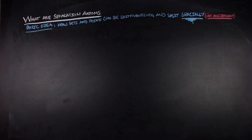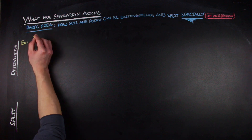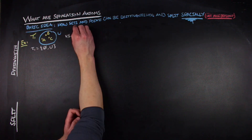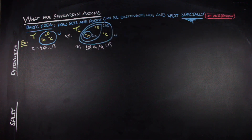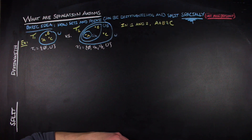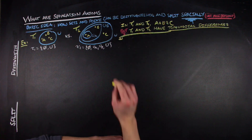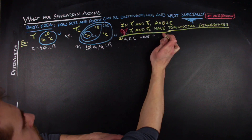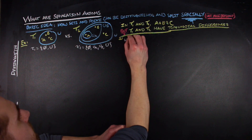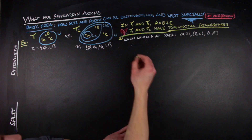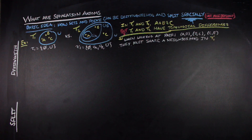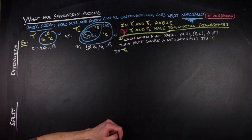Now that we have a basic framework for what a topology is, we can start talking about the different separation axioms. The basic idea is that these are additional conditions added to the requirements of our topology — things that distinguish or split points apart from each other spatially, not algebraically. In the first topology example, we can't choose a neighborhood of point a that does not contain c. Whereas in the second topology, for any pair of points, we can always find one point in that pair that has a neighborhood that is not a neighborhood of the other.